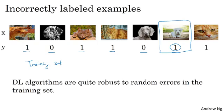If you find that your data has some incorrectly labeled examples, what should you do? Well, first, let's consider the training set. It turns out that deep learning algorithms are quite robust to random errors in the training set. So long as your errors or your incorrectly labeled examples, so long as those errors are not too far from random.